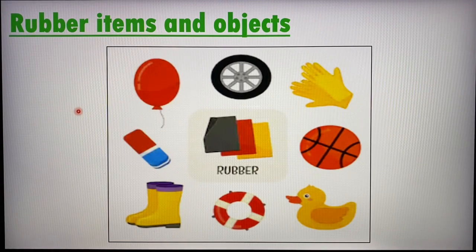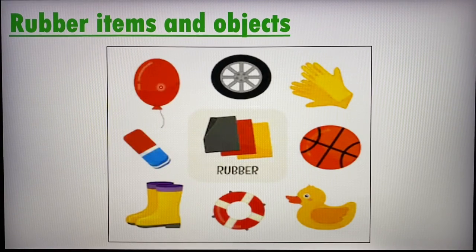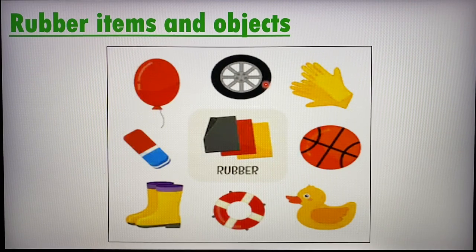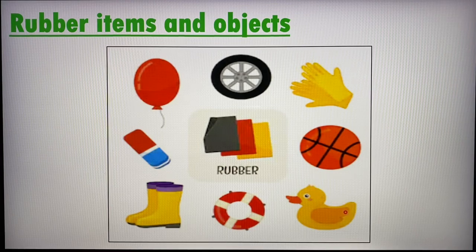Next we move on to rubber items. These are some items usually made of rubber: balloons, tires or wheels, gloves, erasers, and so on.